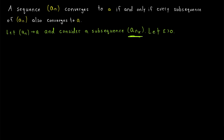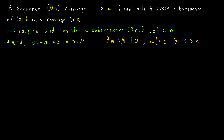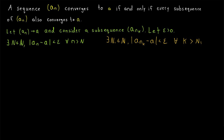We have useful information because every term of aₙₖ, by definition, is a term of aₙ, and we already know that aₙ converges to a. Thus, there is some natural number — say, big N — such that every term of aₙ after the Nth term is within epsilon of a. We want to prove a similar thing about aₙₖ: that there exists some natural number, say big N₁, so that every term of aₙₖ after the N₁th term is within epsilon of the limit a.